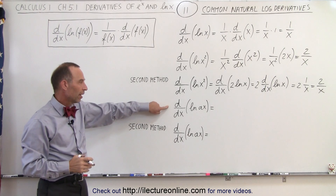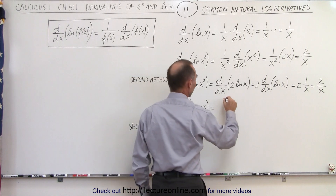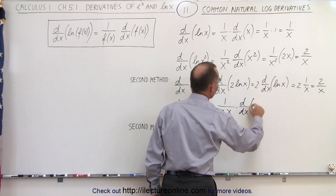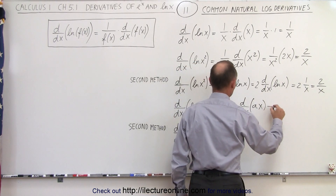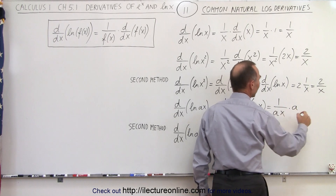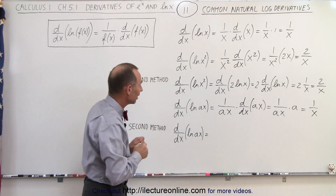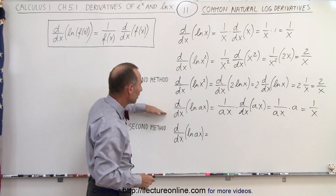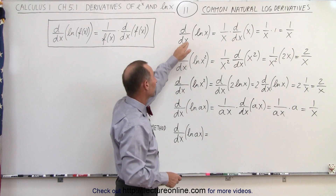Now let's take the derivative of the natural log of ax. We're going to use the same technique. This becomes 1 over ax times the d/dx of a times x. The derivative of ax is a, so this becomes 1 over ax times a. The a's cancel out, leaving us with 1 over x. The derivative of the natural log of a constant times x is exactly the same as the derivative of the natural log of x.